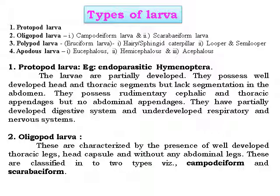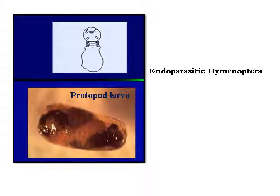Protopod larvae are partially developed. They possess well-developed head and thoracic segments but lack segmentation in the abdomen. They possess rudimentary cephalic and thoracic appendages but no abdominal appendages. They have a partially developed digestive system and underdeveloped respiratory and nervous systems. These are endoparasitic larvae; an example is from Hymenoptera.